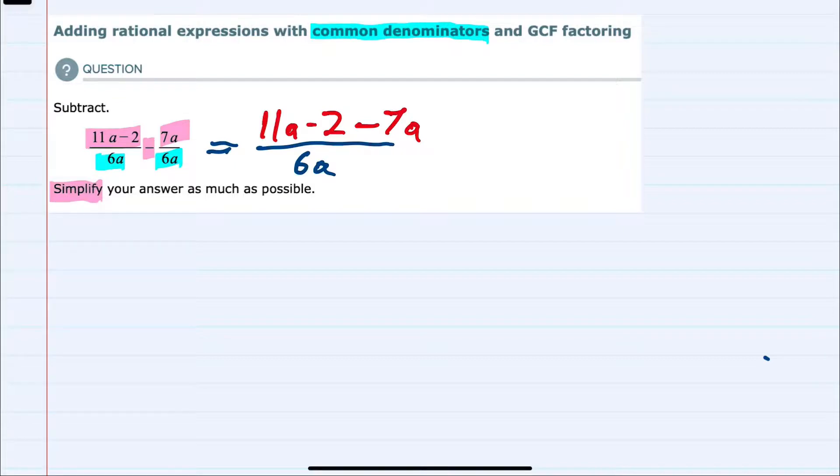Simplifying in the numerator here, this 11a and the minus 7a are like terms so we can combine those. The 11a minus 7a would give us 4a, and we still have the minus 2 in the numerator.